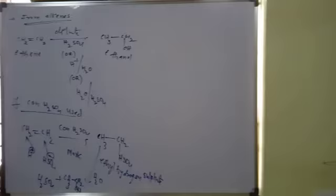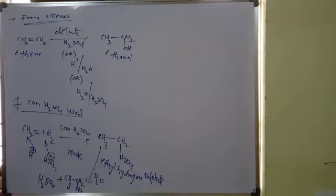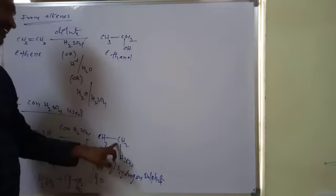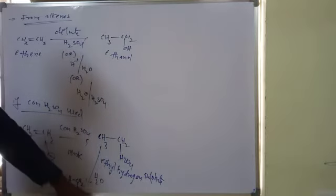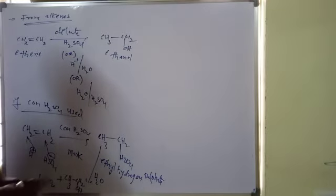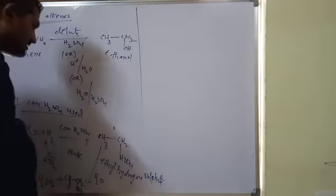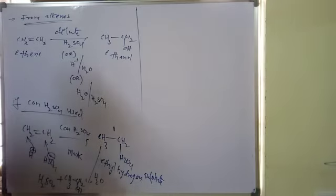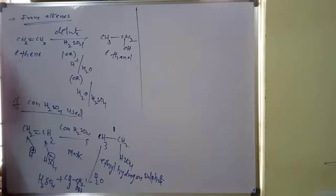After formation of ethyl hydrogen sulfate, if you add water, hydrolysis takes place and ethanol (CH₃CH₂OH) is the product. Sulfuric acid is also regenerated. So with concentrated H₂SO₄, first alkyl hydrogen sulfate forms, then water addition gives the alcohol.